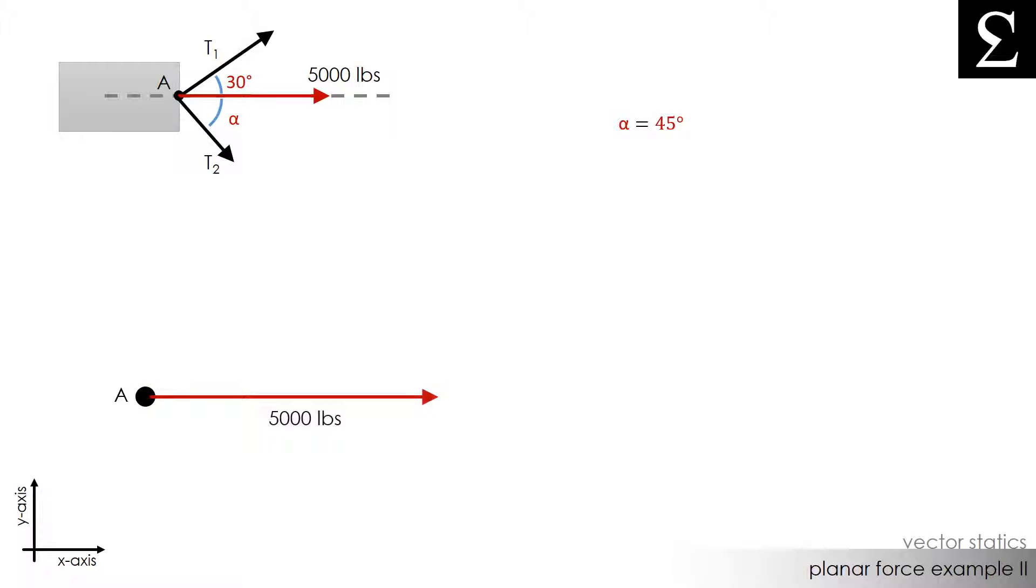We know the resultant force of 5,000 pounds is directly to the right, so I can draw that first. Then, I can draw T1 next. Using the tail-to-tip method, I can draw the end of vector T2 to the tip of vector T1, thus creating a triangle.